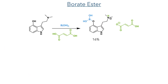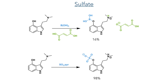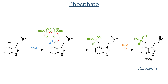As well as these carbon-based prodrugs, they also explored bioisosteres of the phosphate group. To synthesize a borate ester, they simply heated psilocin with boric acid, then evaporated the solvent to yield a brown oil, which was then precipitated as a fumarate salt. The sulfate was synthesized using similar methodology, using sulfur trioxide and pyridine. Finally, to install a phosphate group and yield psilocybin, psilocin was first deprotonated with BuLi, and this was then reacted with tetrabenzyl pyrophosphate. After quenching the reaction and precipitating the intermediate, it was then subject to catalytic hydrogenation to produce psilocybin with a 39% yield.